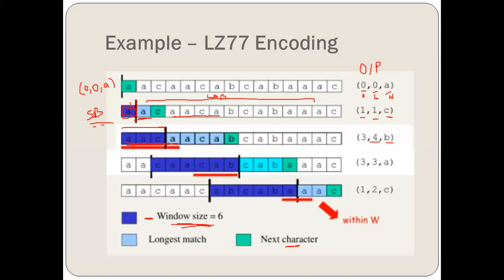Now the sliding window will be moving. The size of the sliding window is total 6 only. We have to move the sliding window up to B, and it will be taken up to C — that is 1, 2, 3, 4, 5, 6 characters. The blue color is now only for these six characters. The total window size is 6, so we keep 6 characters; others will slide through.